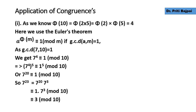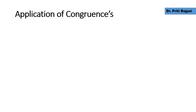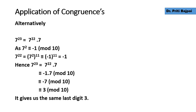Alternatively, we can write 7 to the power 23 as 7 to the power 22 times 7. We know that 7 squared is 49, and 49 + 1 = 50, which is divisible by 10, so 7^2 ≡ -1 mod 10. Then 7^22 = (7^2)^11 ≡ (-1)^11 = -1 mod 10. So 7^23 ≡ (-1) × 7 = -7 ≡ 3 mod 10. Again we get the last digit as 3.